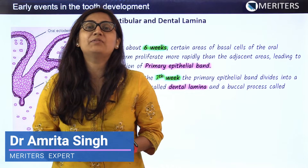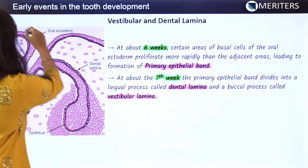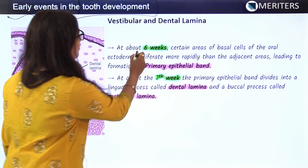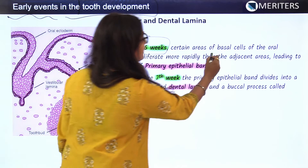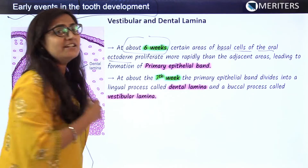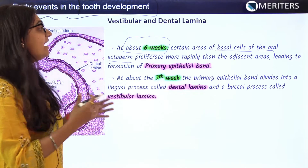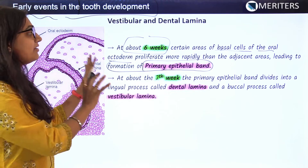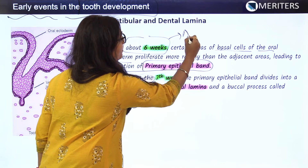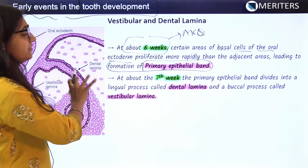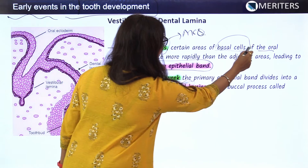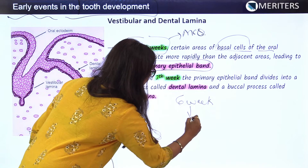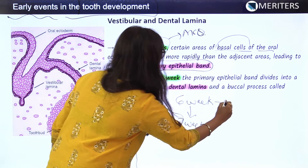Today we are going to start with a very interesting topic called early events in tooth development — how a tooth develops histologically. At around six weeks of intrauterine life, certain basal cells of the oral epithelium start proliferating more rapidly than adjacent areas, which leads to the formation of the primary epithelial band. Each week mentioned is very important as MCQs can be formed from this.